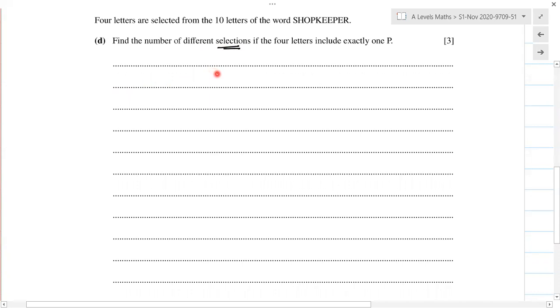In the previous parts A, B, and C, we had arrangements, so that was permutation. So here we know that this question is for combination. You are selecting four letters, it should only include one P, so that's one P.